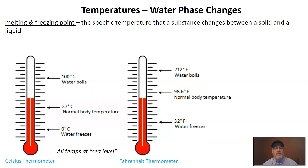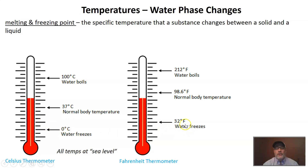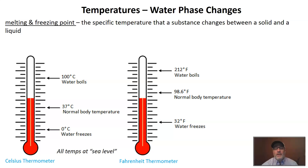When we think about phase changes, there are some specific temperatures that really matter for each substance. We're going to look at water. Some of you already know that we have to start looking out for snow and ice at 32 degrees Fahrenheit, because that is the temperature that water freezes at. On the Celsius scale, it's the same amount of heat energy, but water is going to freeze at zero degrees Celsius.